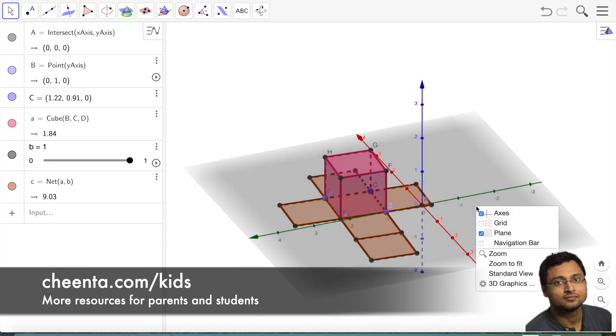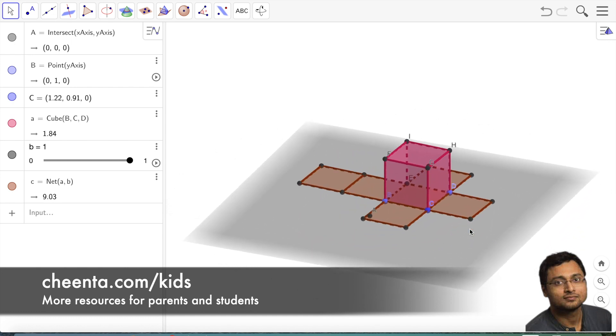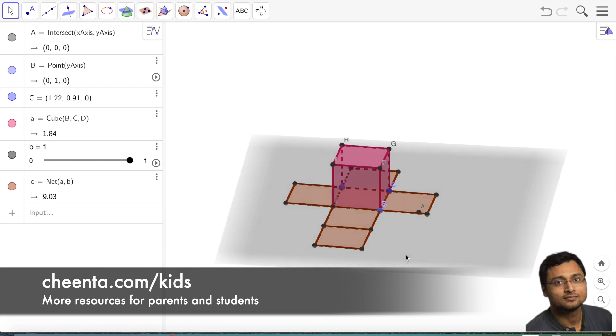Let's remove this axis to make it look better. Now, we can use this slider to the left to make the animation happen.